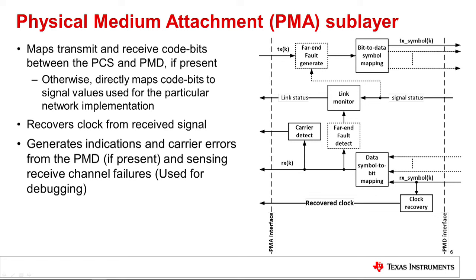Proper functioning of the PMA is important as it needs to pass compliant tests. Finally, note that for versions of the standard that use multiple twisted pairs, such as 1000BaseT, there will be a one-to-n mapping of the symbol stream. For example, 1000BaseT uses four twisted pairs, designated as channels A, B, C, and D.